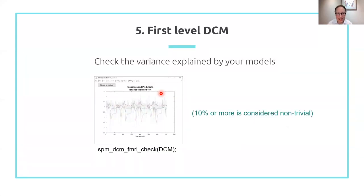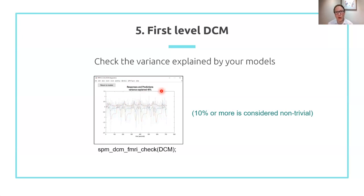As well as getting those outputs, it's really important that you check the variance explained by your models. You can't use accuracy alone to compare different models, but you can use it as a sanity check to make sure a non-trivial amount of variance is being explained. You can take your DCM from each subject and put it into the function SPM_DCM_fMRI_RideCheck, and it will tell you the variance explained as a percentage. It's really important that you report that in your paper, because if your great new model of the visual system only explains 3% of the variance, your reader could quite reasonably ask: who cares?